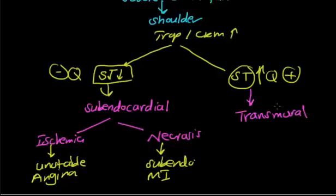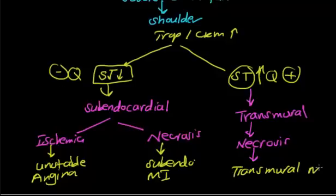Keep it in your mind: troponin and CKMB increasing, both of them. So now we are talking about transmural tissue. The pathology is necrosis. What is the diagnosis after all of this? It is transmural MI or transmural myocardial infarction.